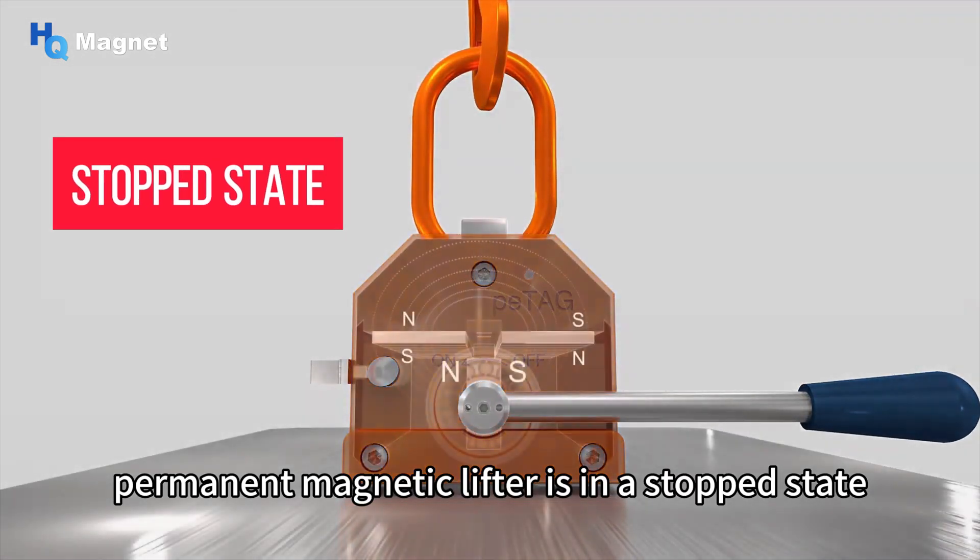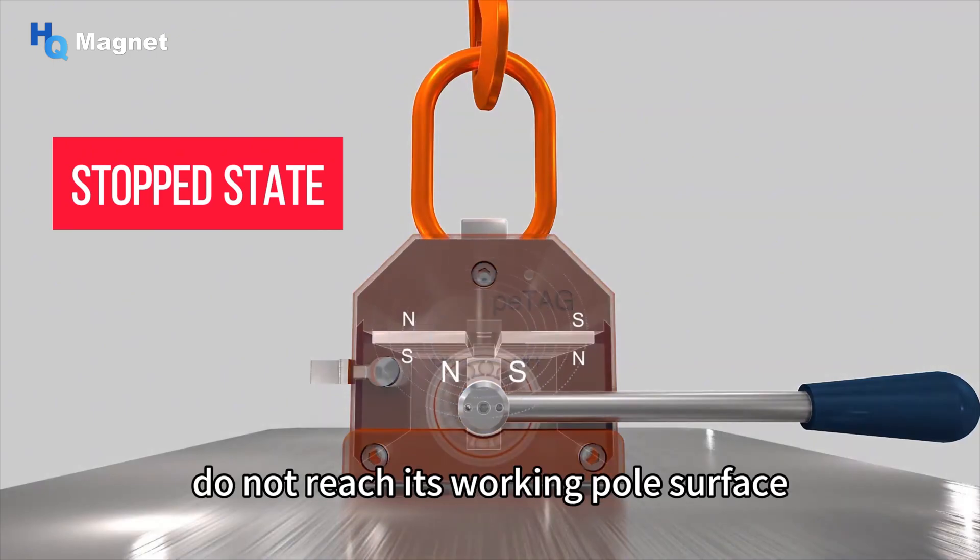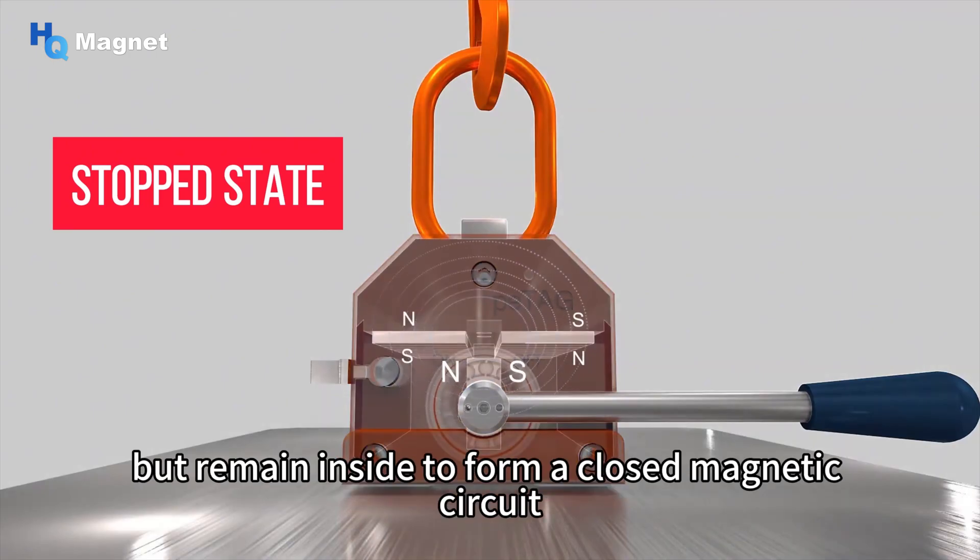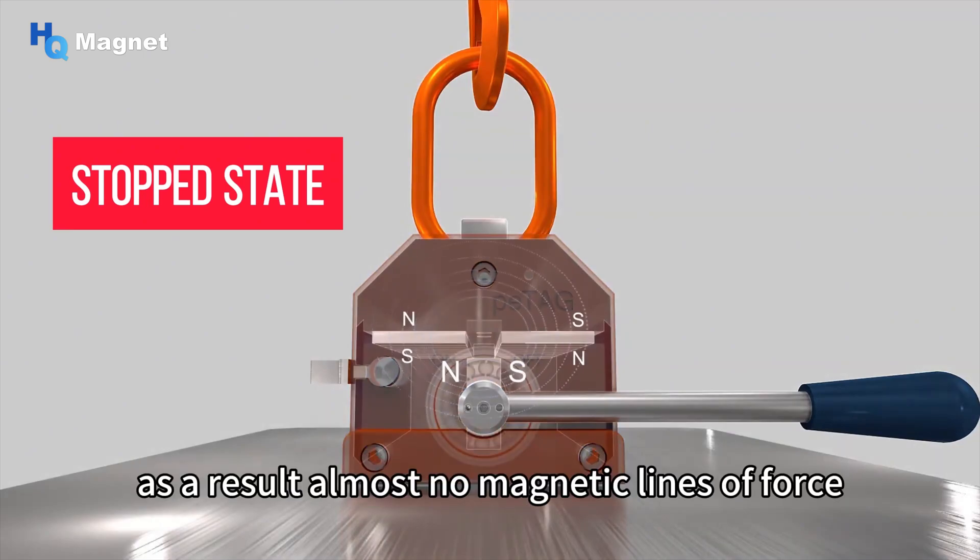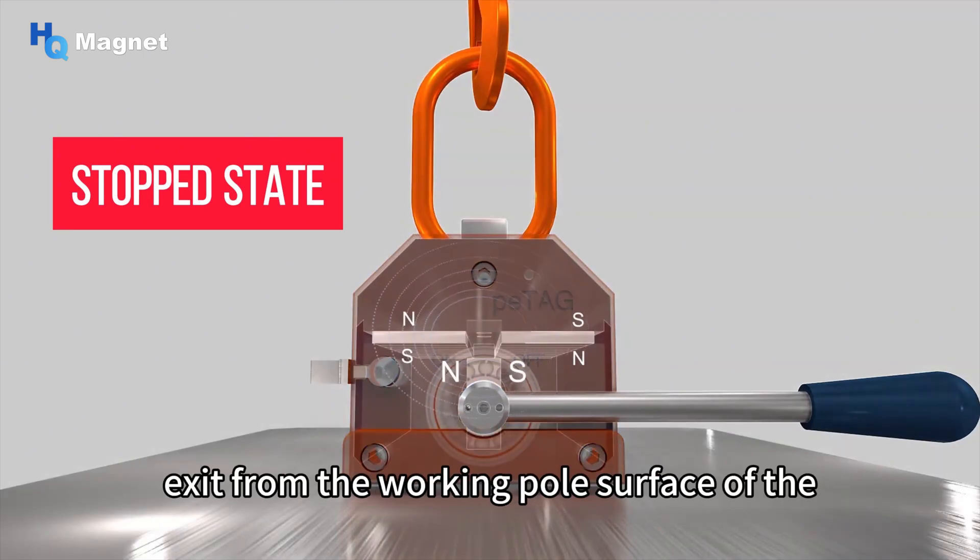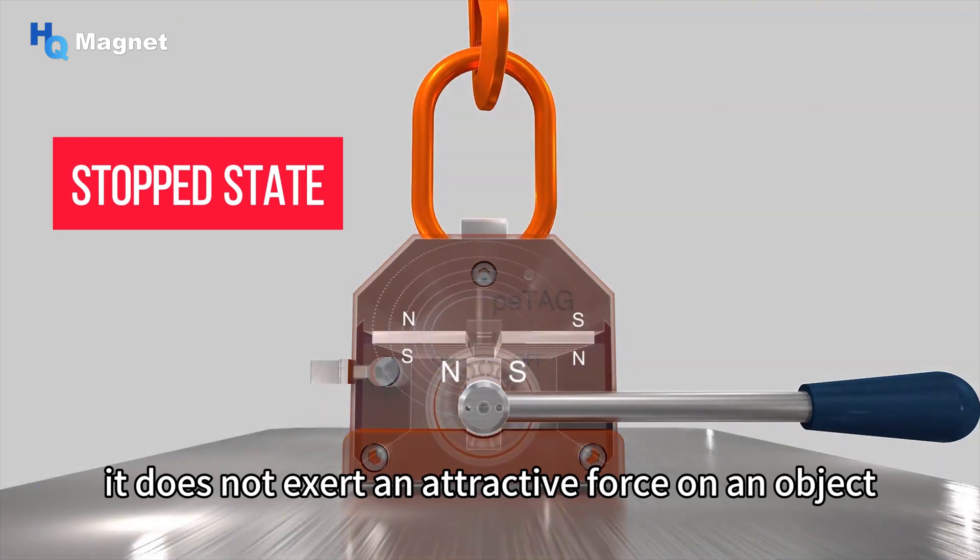When the permanent magnetic lifter is in a stopped state, the magnetic lines of force do not reach its working pole surface, but remain inside to form a closed magnetic circuit. As a result, almost no magnetic lines of force exit from the working pole surface of the permanent magnetic lifter, and therefore, it does not exert an attractive force on an object.